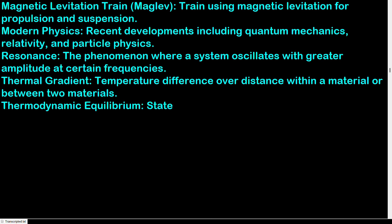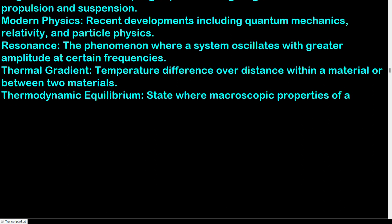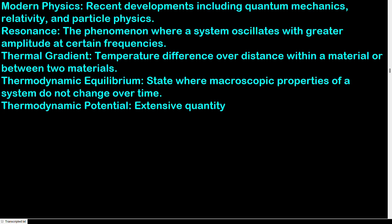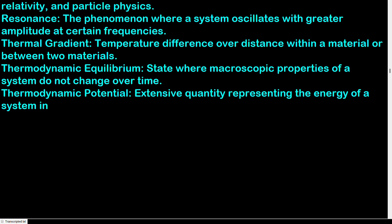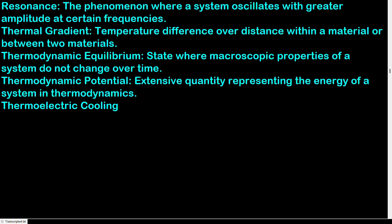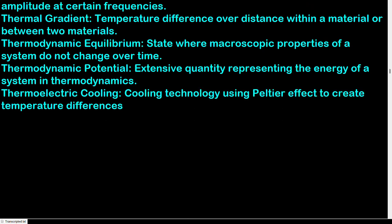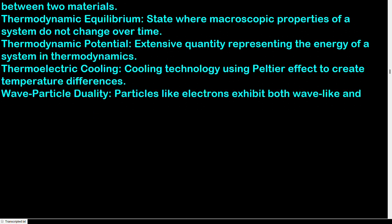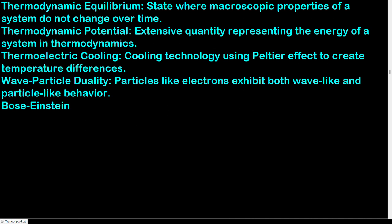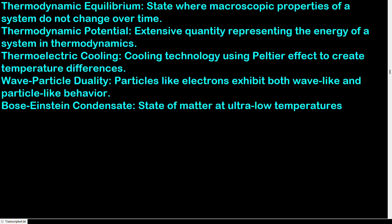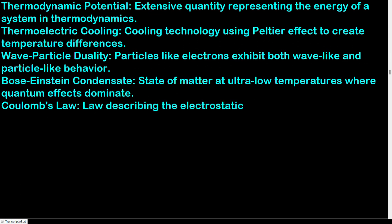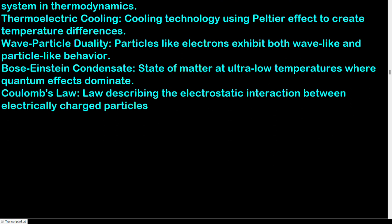Thermodynamic equilibrium: state where macroscopic properties of a system do not change over time. Thermodynamic potential: extensive quantity representing the energy of a system in thermodynamics. Thermoelectric cooling: cooling technology using the Peltier effect to create temperature differences. Wave-particle duality: particles like electrons exhibit both wave-like and particle-like behavior. Bose-Einstein condensate: state of matter at ultra-low temperatures where quantum effects dominate. Coulomb's law: law describing the electrostatic interaction between electrically charged particles.